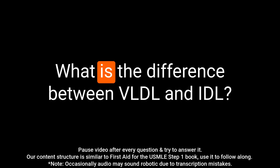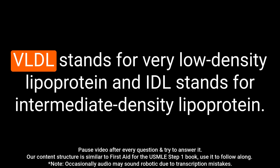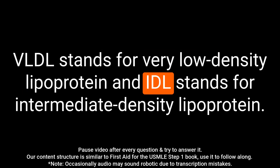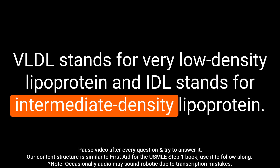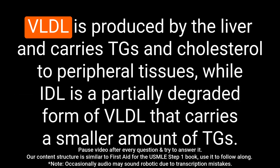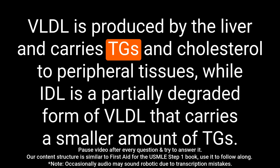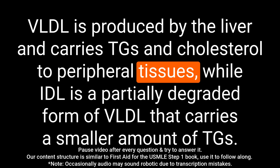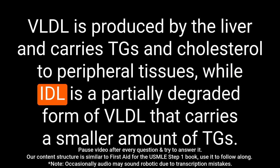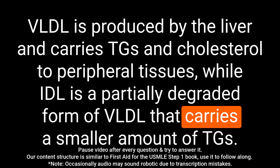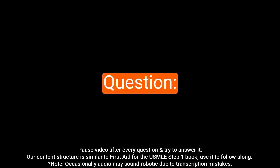Question: What is the difference between VLDL and IDL? Answer: VLDL stands for very low density lipoprotein and IDL stands for intermediate density lipoprotein. VLDL is produced by the liver and carries TGs and cholesterol to peripheral tissues, while IDL is a partially degraded form of VLDL that carries a smaller amount of TGs.